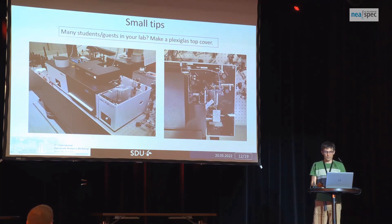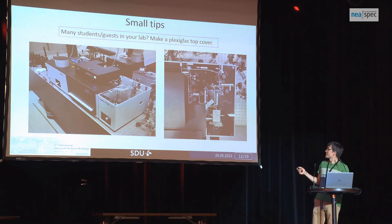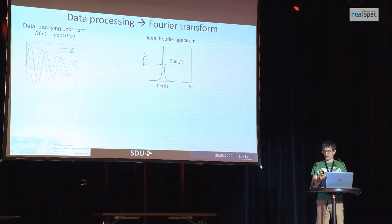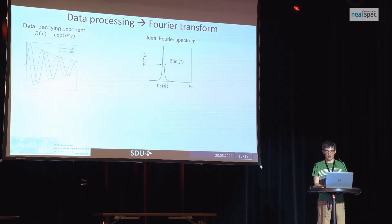Another small tip: if you have many students or guests in your lab who need to understand what's going on, one thing I did recently is replace the top cover with a plexiglass transparent cover. There you can see what's going on inside the box, because otherwise it's just a black box. You can draw the ray paths showing how the light goes in and out and put labels — it's really useful, especially for students who want to know how it works inside. It seems like my time is running out, but I hope to talk about data processing during the demo session this afternoon.